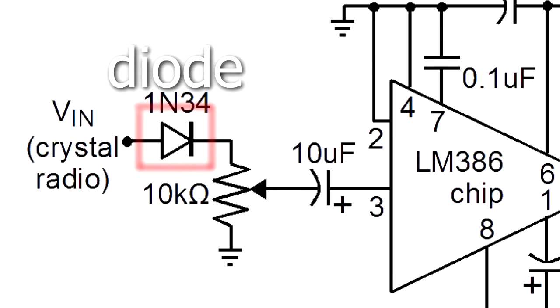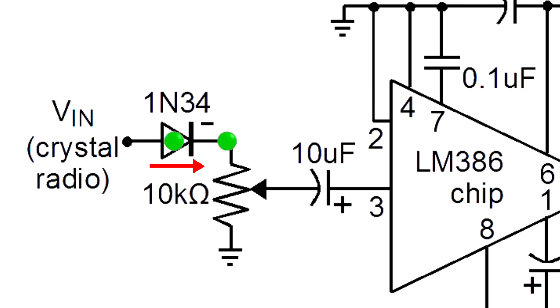This is a diode. It allows current to flow in one direction only, this direction. The negative side is this side. If you're used to thinking in terms of electrons, which are negative, the electrons flow in this direction, against the arrow.